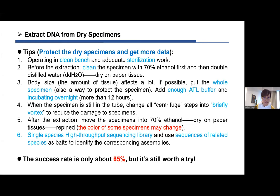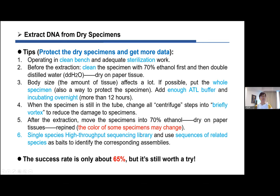Body size and amount of tissue affect results a lot. If possible, put the whole specimen into the tube without dissecting the legs. If the specimen is large, use a larger tube and add more lysis buffer. Incubate overnight — sometimes more than 12 hours. To protect the specimen while it's still in the tube, replace all centrifuge steps with brief vortexing to reduce damage. After extraction, clean the specimen again with 70% ethanol, dry on paper tissue, and repin it.